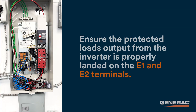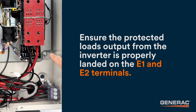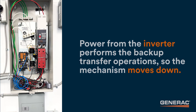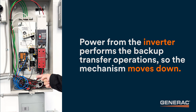Now, let's ensure that the protected loads output from the inverter is properly landed on the E1 and E2 terminals. Power from the inverter performs the backup transfer operation, so the mechanism moves down.